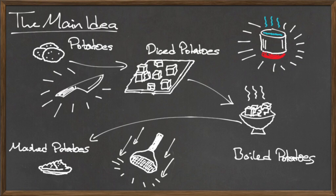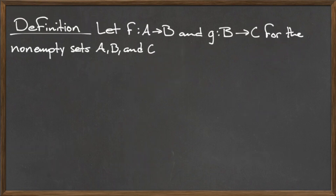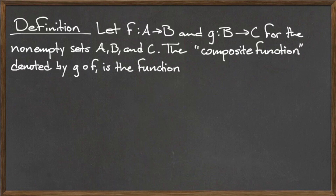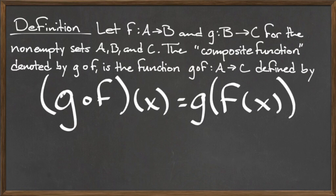This is the idea behind function composition — we use the output of one function as the input into another function. With the general idea in mind, we can now formally define the composition of functions. Let f be a function from A to B, and g be a function from B to C, for three non-empty sets A, B, and C. The composite function, denoted g compose f, is the function g compose f from A to C, defined by g compose f of x is equal to g of f of x.